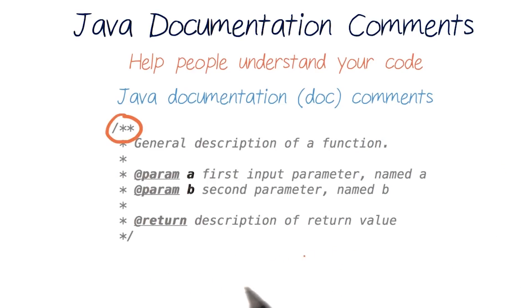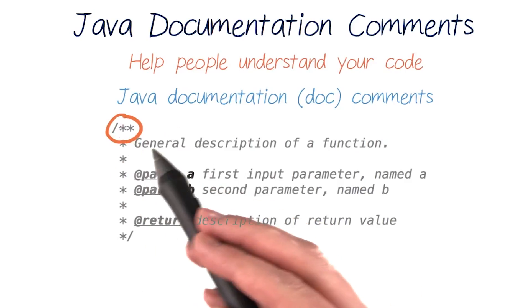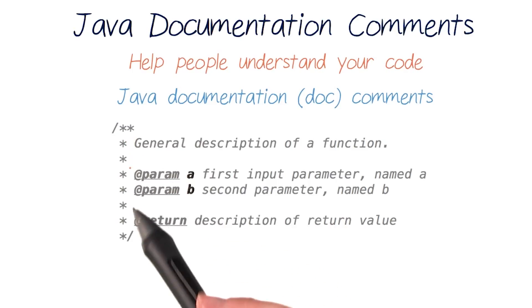So this kind of comment lets you generate document descriptions, and it starts with a slash and two asterisks. Then each line starts with a single asterisk, and it ends with an asterisk slash, just like our multi-line comment did. And there are tools that help you generate comments like this automatically, so don't worry too much about this syntax.